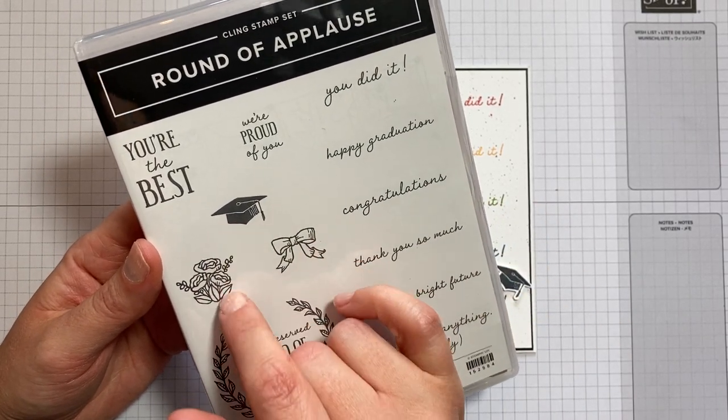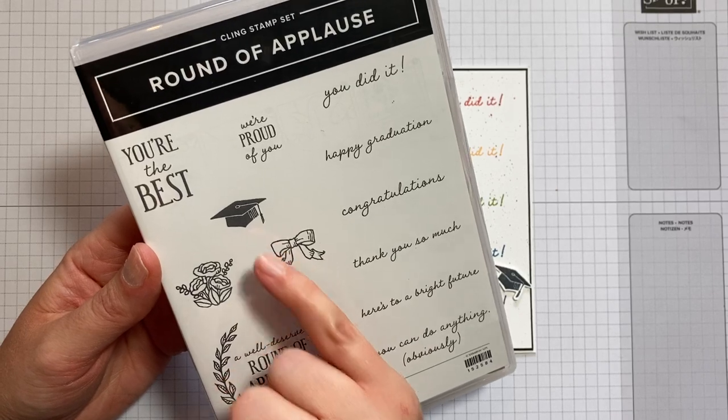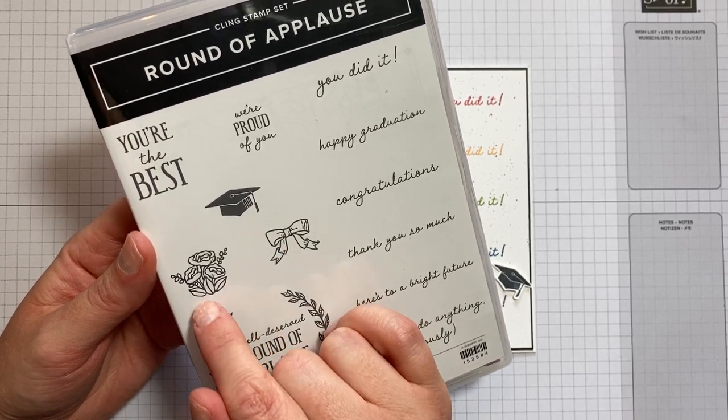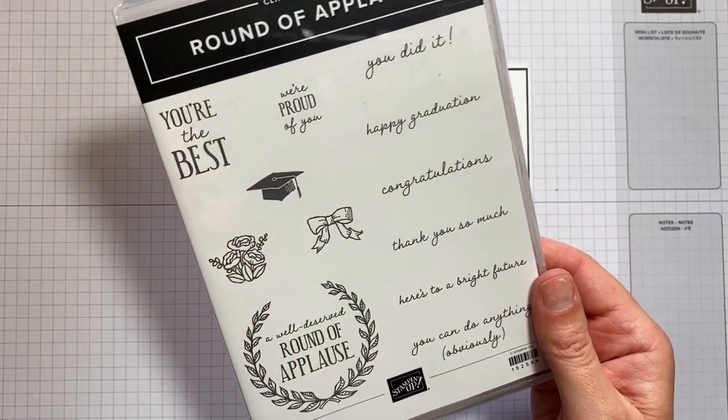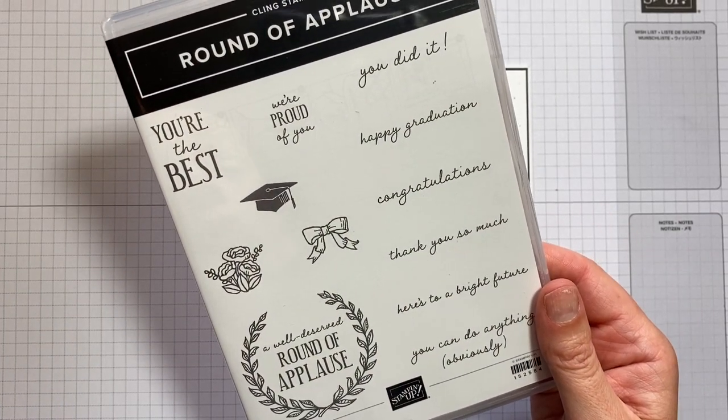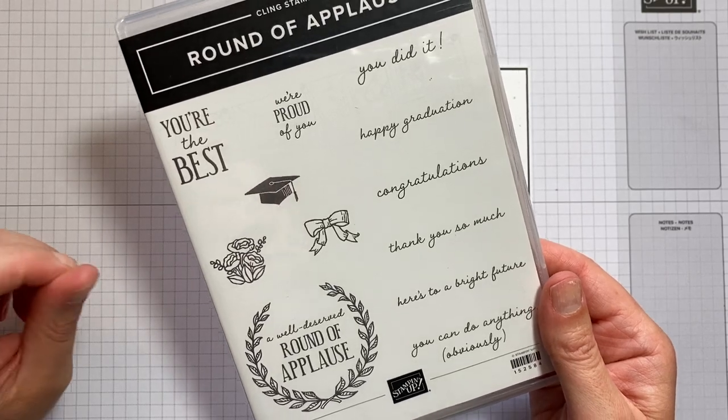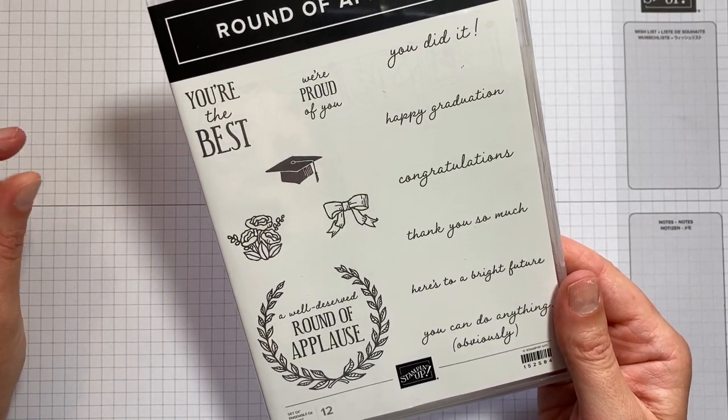And then these little images: the mortarboard which is the one we're going to be using today, also this cute little flower and a bow. So it's great for graduation but also for other types of congratulations cards and gifts.